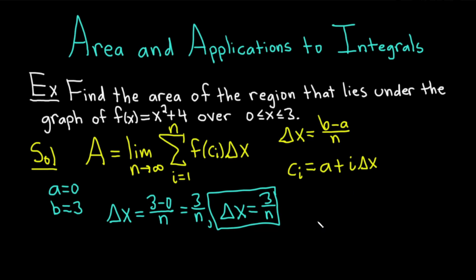The next piece to focus on is c_i. Let's go ahead and fill that in. Well, a is 0, so it'll be 0 plus i times Δx, which is just 3/n. So c_i = 3i/n. Again, I'm going to put this in a box because it's important. Plus, if you're doing this for a class or something, the more work you show, the better. And putting things in boxes makes it really easy for the person looking at your work. Okay, so we've got Δx, we've got c_i. We just need f(c_i).